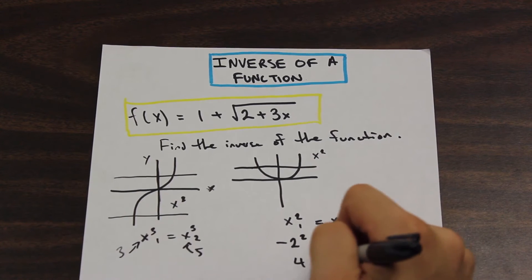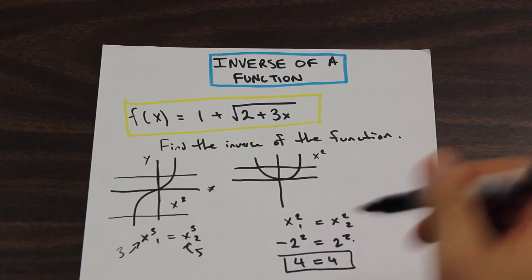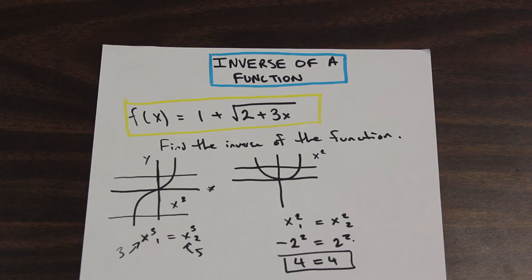We would get 4 on both sides. And that also confirms that this is not a one to one function. So those are the rules, and hopefully that helps explain that.